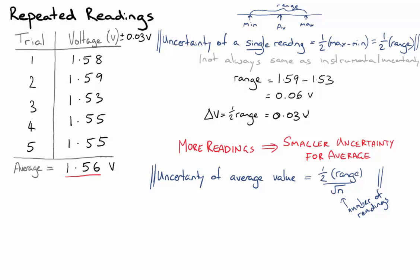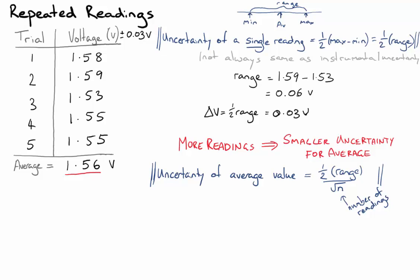I'm just going to add back up here that this equals, we often call it delta V, and that delta means a change in, it's the uncertainty. And so I'll just write the same thing down here. The change in, or the uncertainty in the average voltage is one-half times 0.06 divided by the square root of 5, and that gives us 0.0134 volts.